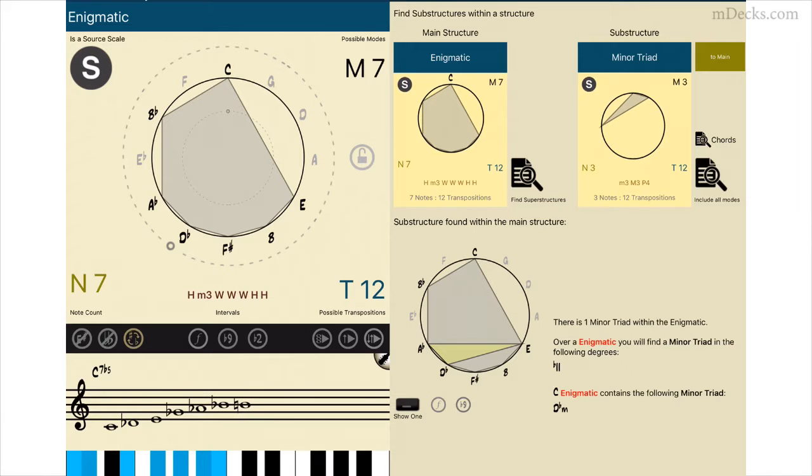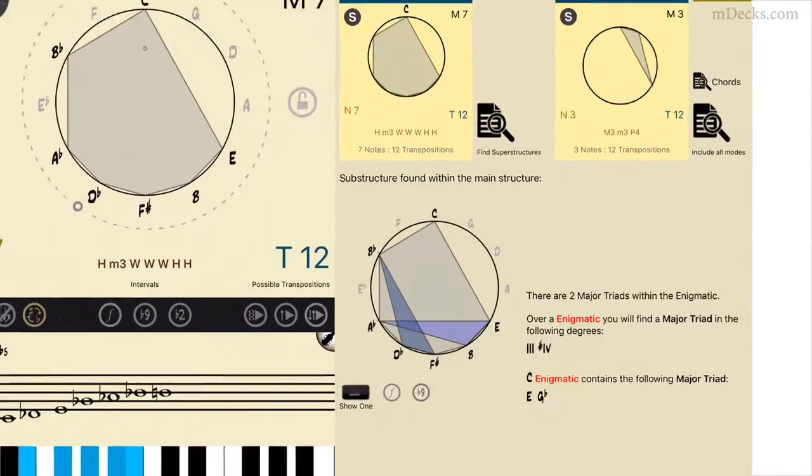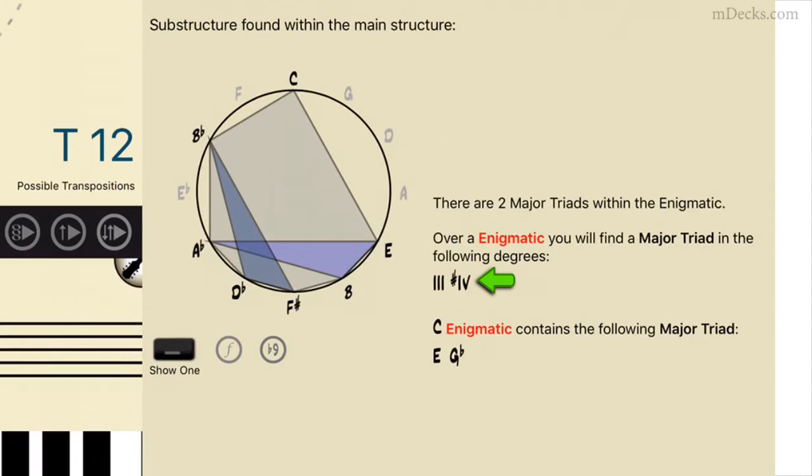So the D-flat minor is the only minor triad inside the C enigmatic scale. All the notes of the D-flat minor triad belong to the C enigmatic. Let's look at major triads. There are two inside the enigmatic. On the 3, and the other on the sharp 4. In C enigmatic, that's E major triad and G flat major triad.